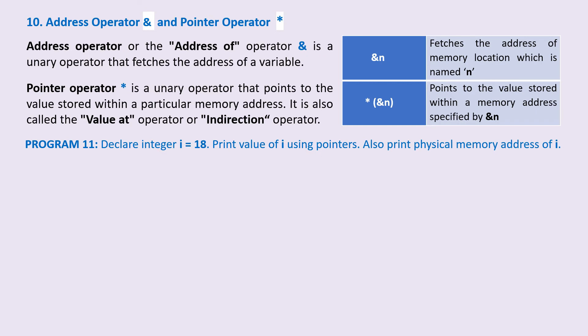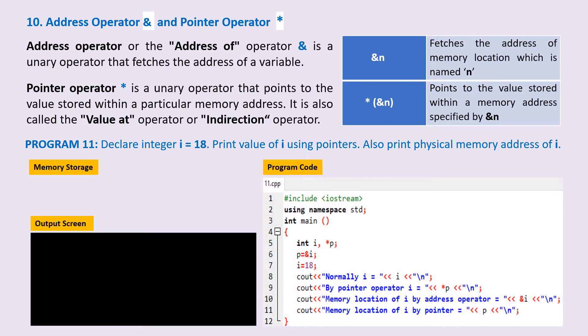So here we go. On the program visualizing panel, we have the sections for program code, memory storage, and output screen. I have named our program as 11.cpp.